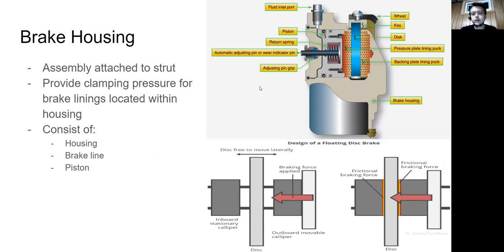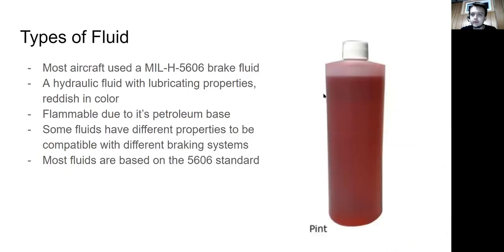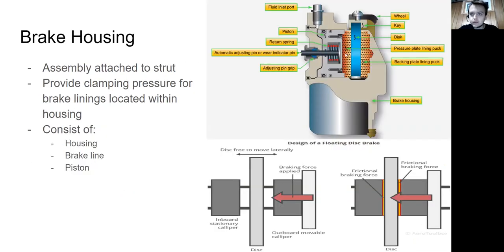The brake housing, or brake caliper, is an assembly attached to the strut of each landing gear. This provides the clamping pressure for the brake linings, also known as brake pads, which are located inside the housing. The disc is right here in the middle and moves with the wheel.